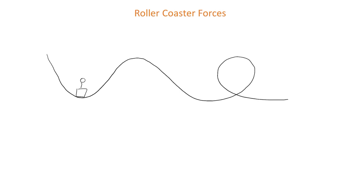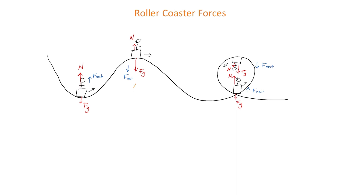In summary, you should be able to look at every point on the roller coaster and draw the forces acting on that rider — the normal force, the force of gravity, and the net force. Make sure you can also find the minimum speed the riders need to stay on the tracks. That's the end of this lesson on roller coaster forces.